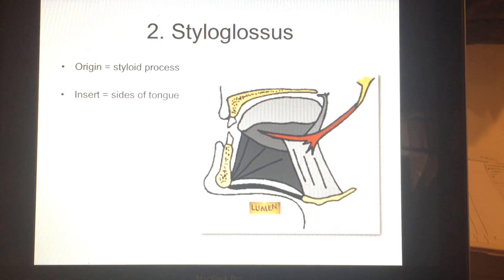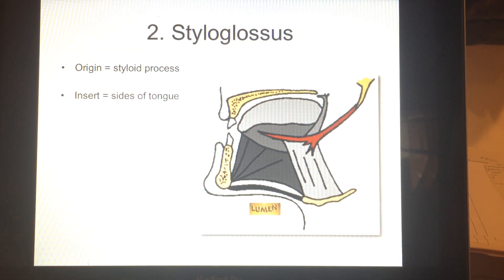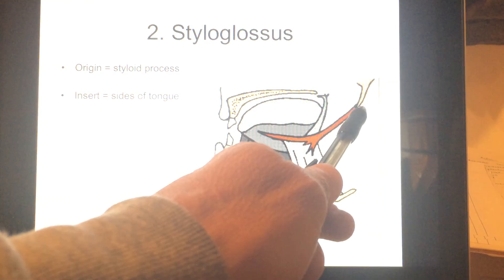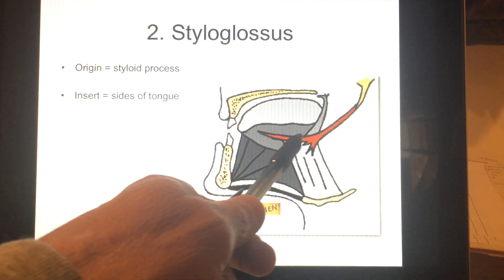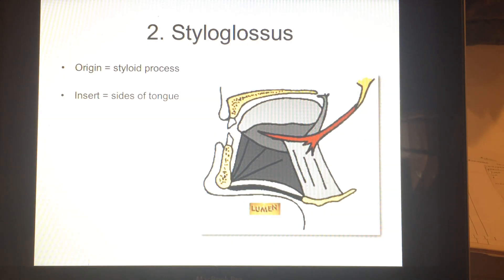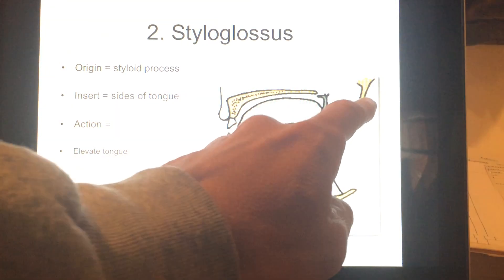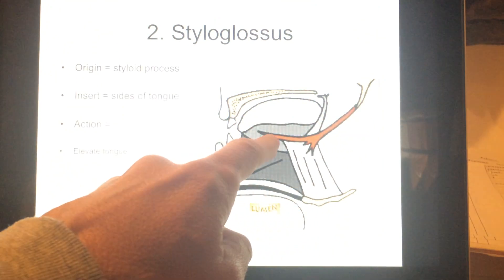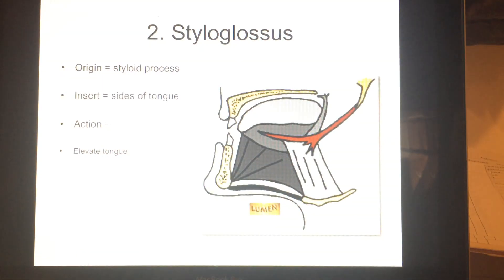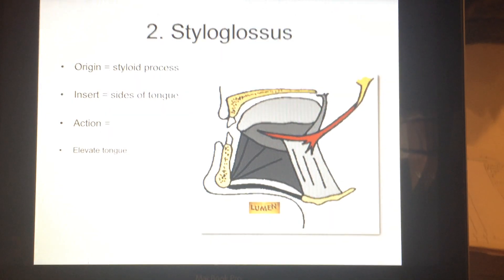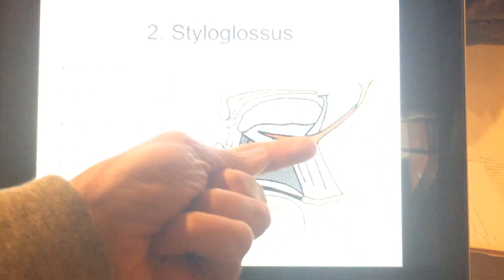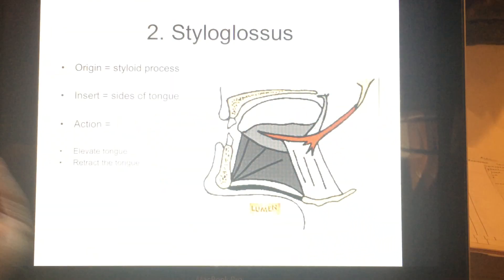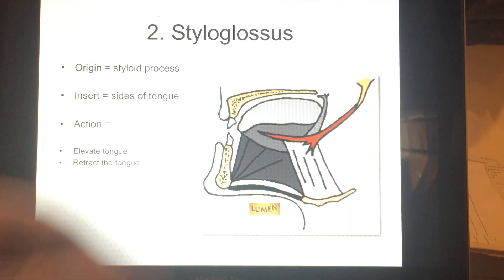Now every time you do this with any muscle, take a look at the origin — where is the origin relative to the insertion point? The origin is actually above, so when this contracts it pulls the tongue up in your mouth. It can elevate the tongue. It can also retract the tongue because the origin is behind the tongue. So you can stick your tongue out and then you can pull it back into your mouth. This one goes up and backwards.